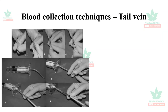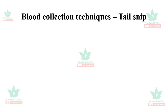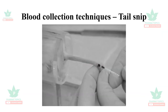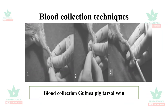The tail snip is a less preferable technique of blood collection used in rats and mice. In case of guinea pigs, blood is collected from the tarsal vein, which is located in the tarsal region.